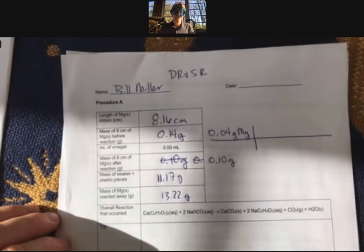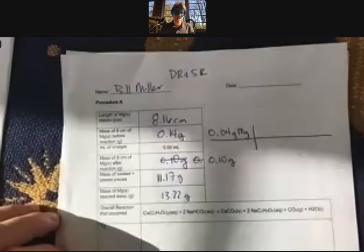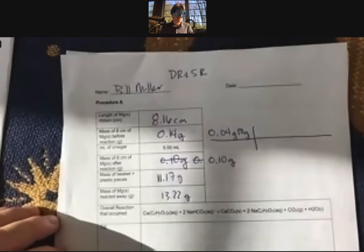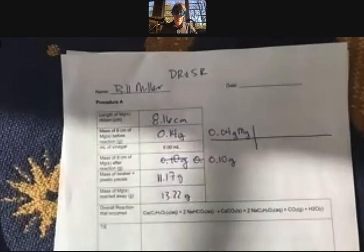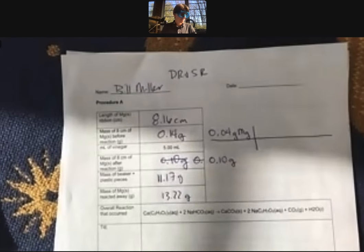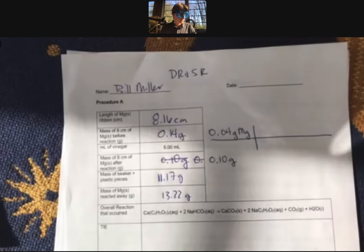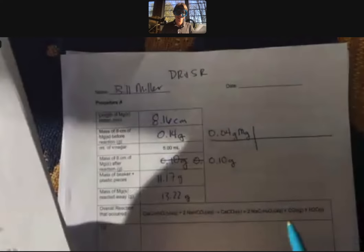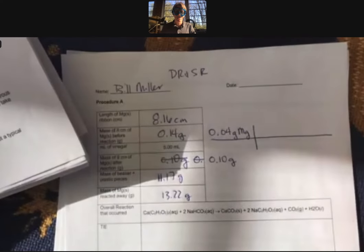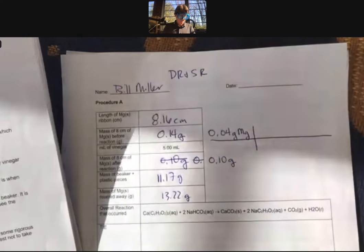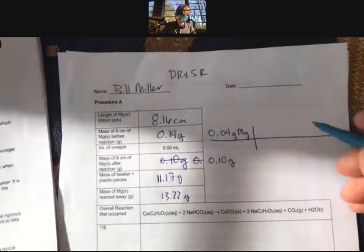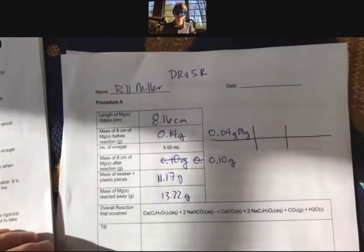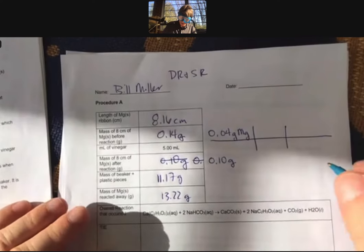We're going to do a GMMG — Gilbert makes mean goats. You can tell I made that up on the spot there. But we've got grams, and we're going to go to moles using the molar mass of magnesium.